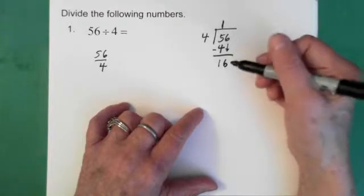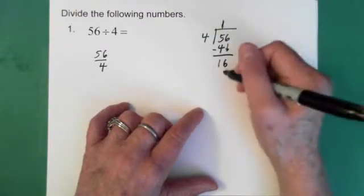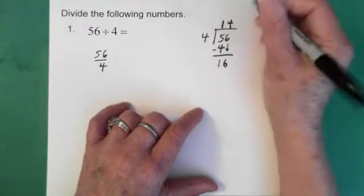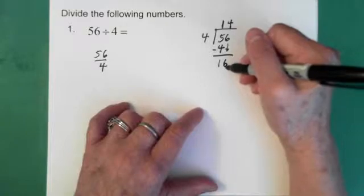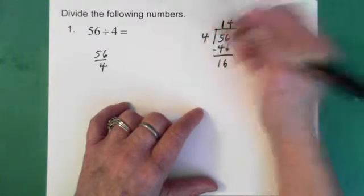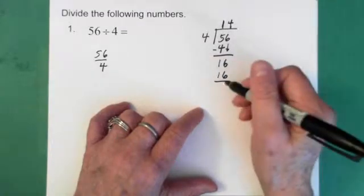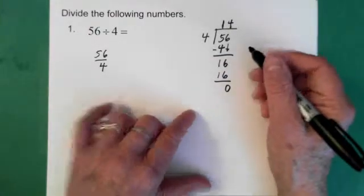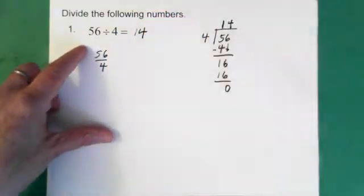Once you've done those steps, then you say, how many times does four go into sixteen? Four goes into sixteen four times, and that four goes directly above the six. That's because we're talking about the sixteen. Four times four is sixteen, so the sixteen goes under the sixteen. Then we subtract and we get zero, and then we're finished. The answer to this question, fifty-six divided by four, is fourteen.